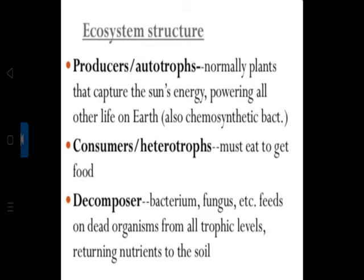Herbivores are called key industry animals because the life of other members of the community depends upon them. Herbivores in turn are used as food for primary carnivores or secondary consumers — such as water beetles and dragonflies in a pond, which feed on primary consumers. Secondary consumers may then be utilized as food for tertiary consumers or secondary carnivores. Fish that eat water beetles and dragonflies are an excellent example of tertiary consumers. Some ecosystems have top carnivores like lions and vultures, which are rarely killed or eaten by other animals.